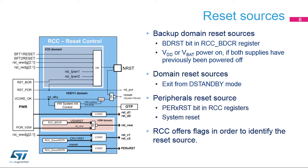A D1 or D2 domain reset occurs when one of the two domains has been switched off. In addition, the peripherals have individual reset control bits. It is also possible to reset the CPU1 and its associated window watchdog WWDG1, or RSTC1, and to reset the CPU2 and its associated window watchdog WWDG2, or RSTC2.